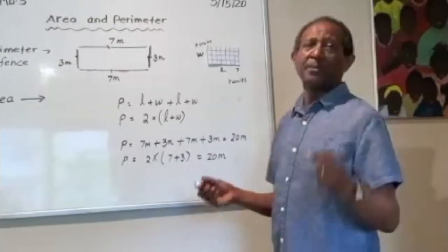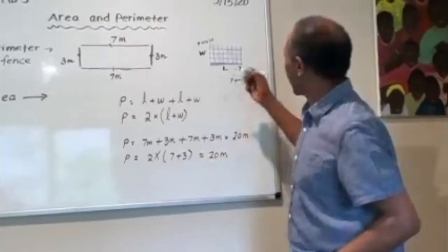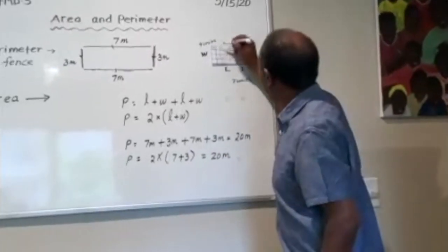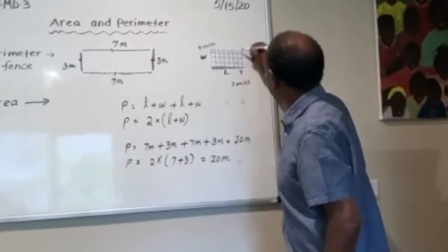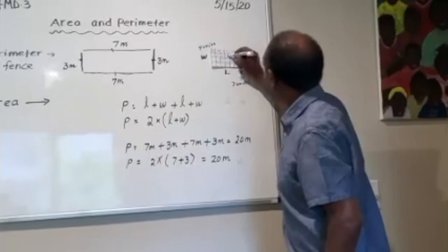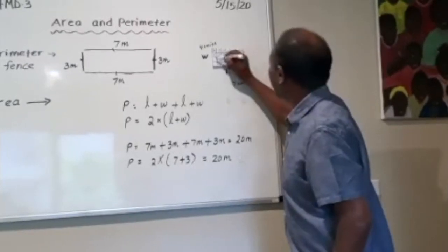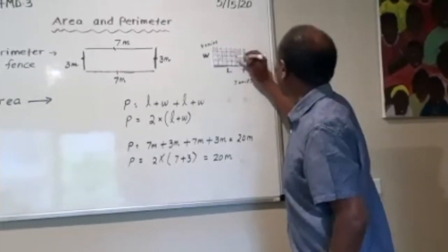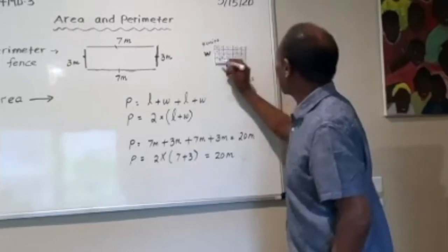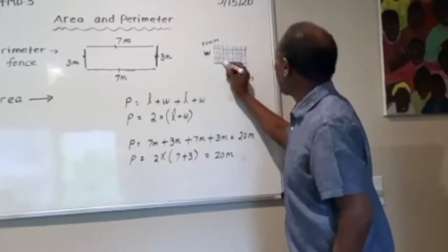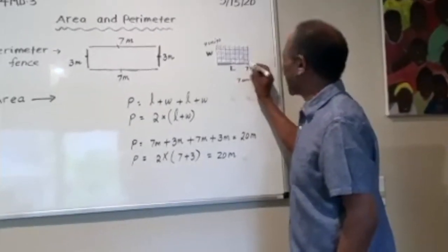So the area is how many squares are inside — how many unit squares are inside? Area is measured by square units. In third grade we would count them: 1, 2, 3... all the way to 28. There has to be an easier way.